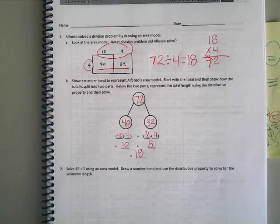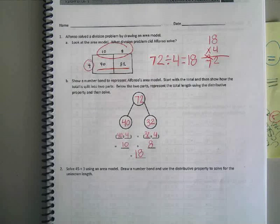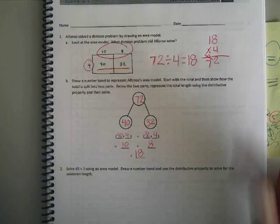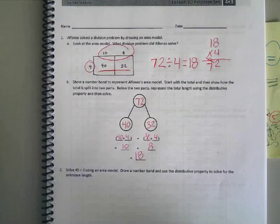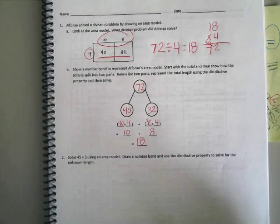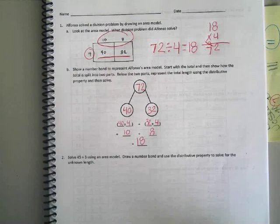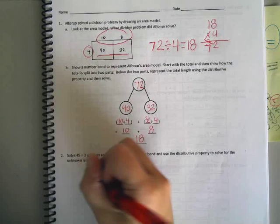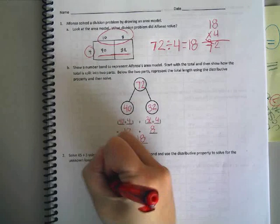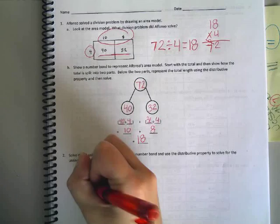All right. Number 2. Solve 45 divided by 3 using an area model. Draw a number bond and use the distributive property to solve for the unknown length. So we are going to do exactly what we did up here for Alfonso, but with our own problem. So how can I set that up? Maddie? Draw a rectangle or square and put 45 in it and the other side. All right. So I'm going to draw my rectangle and I'm going to do 45 and 3. Like that?